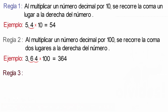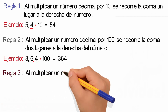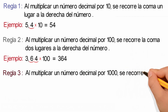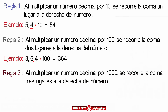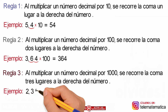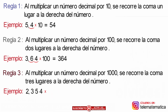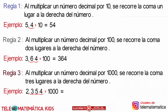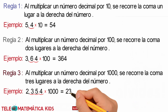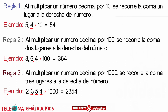And rule number three: when multiplying a decimal number by 1000, the comma moves three places to the right of the number. For example, 2.354 multiplied by 1000. Applying the rule, we run the comma three places to the right and we will have as a result the number 2354.